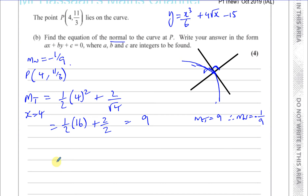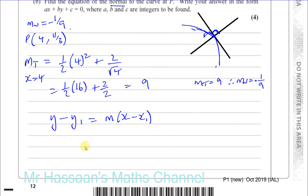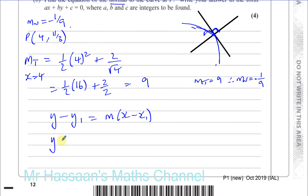Now I can use the equation of a straight line: y minus y1 equals m times x minus x1. So I have y minus 11 over 3 equals minus 1 over 9, times x minus 4.